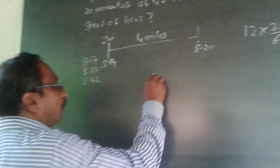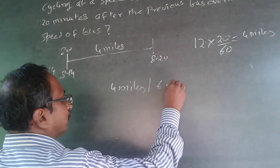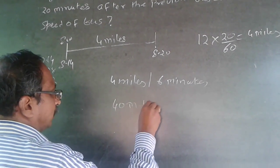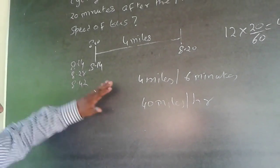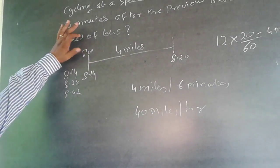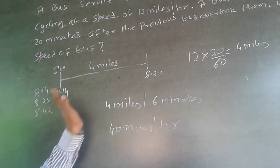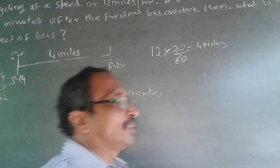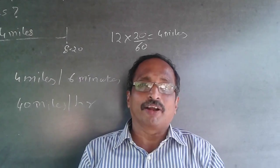The speed of the bus is 4 miles in 6 minutes, which equals 40 miles per hour. As simple as that — the second bus is at 8:14, it takes 6 minutes to cover 4 miles, giving a speed of 40 miles per hour. Please subscribe to my channel; I'll be adding questions regularly.